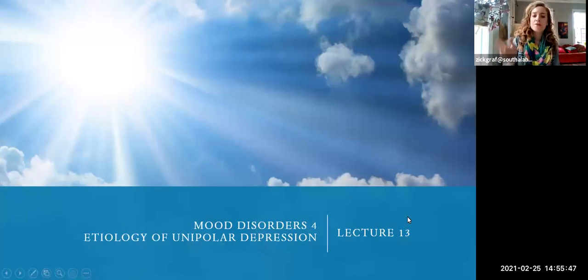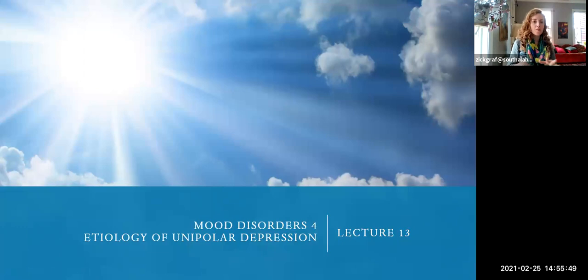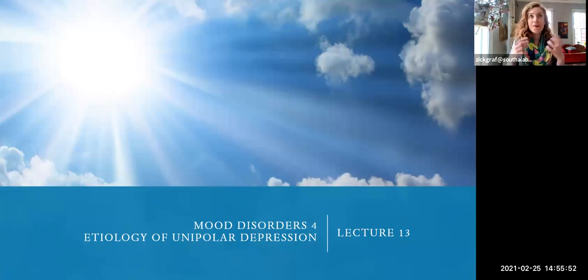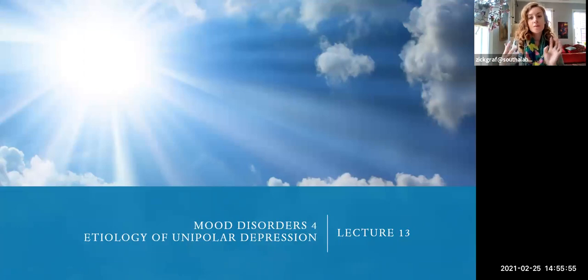This is the fourth lecture on mood disorders, and I'm going to talk about the etiology of unipolar depression. So the three Ps: predisposition, precipitation, and perpetuation.